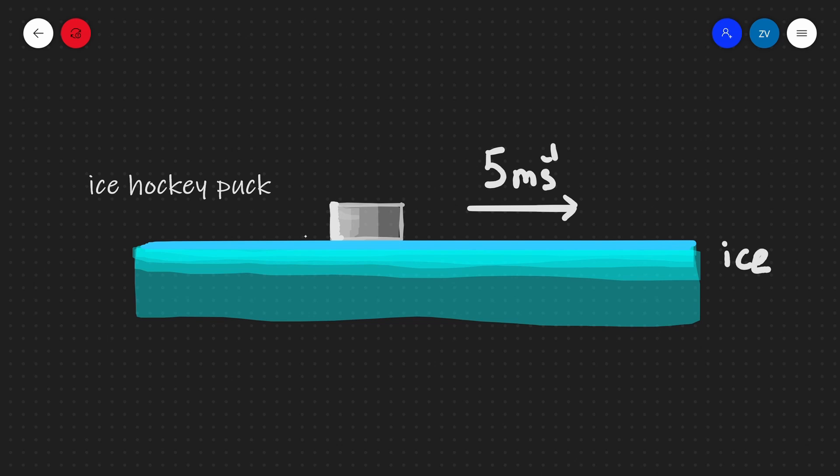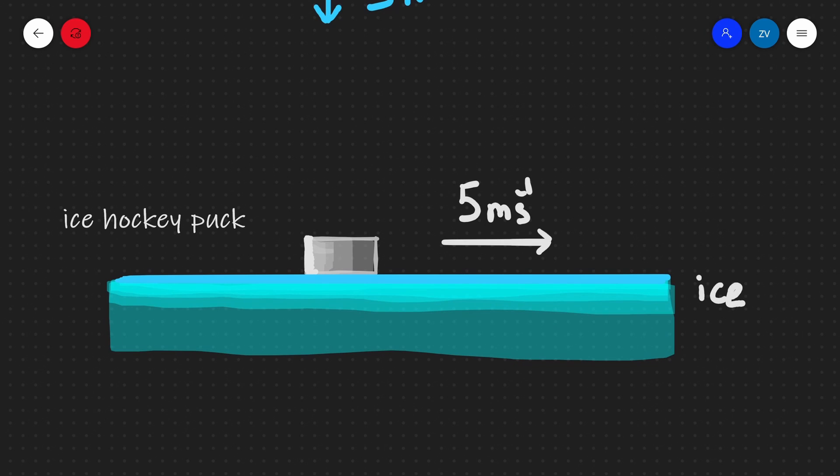And this ice hockey puck is just sliding along this ice surface. For the purposes of this example, we're going to assume that there's no friction. In reality, there's a tiny bit of friction and also no air resistance.